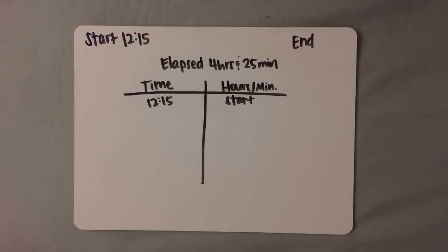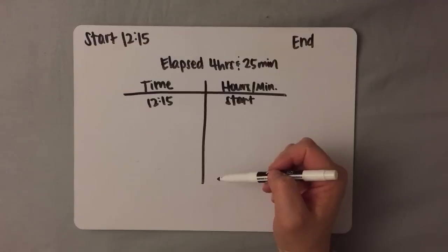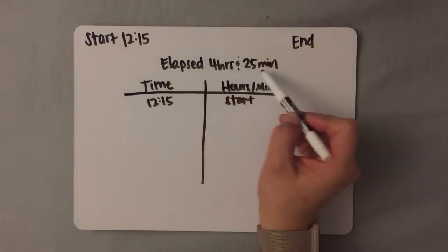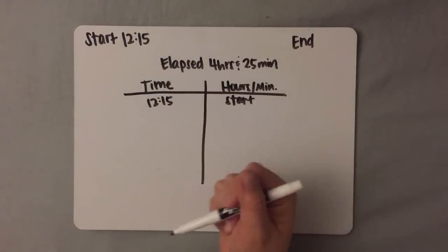So, unlike an elapsed time t-chart, I'm not counting up minutes until I find an end time. This time, I'm going to be using the minutes that I'm given under the elapsed time until I'm done, which will then give me the end time.